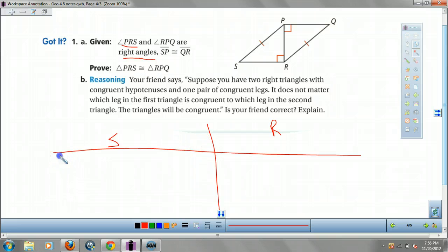So I'm going to start off with this. So PRS and RPQ are right angles.